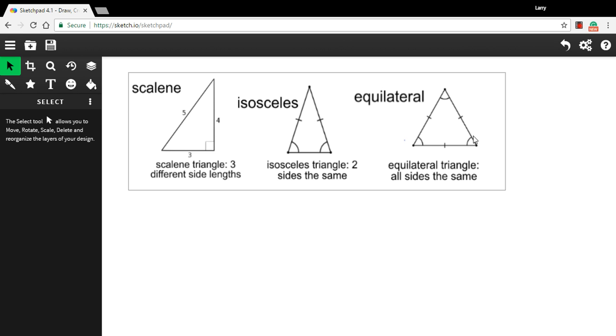And finally, the other possibility is that all three sides could be the same length, and we call that an equilateral triangle. Equi here means equals. Lateral means side. So three equal sides, an equilateral triangle.